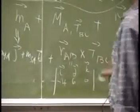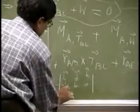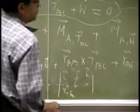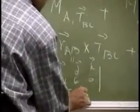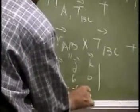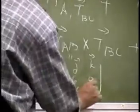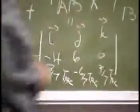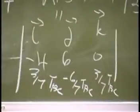Then T_BC, you know T_BC has 3/7 T_BC. So that is one set of equations, the second one.